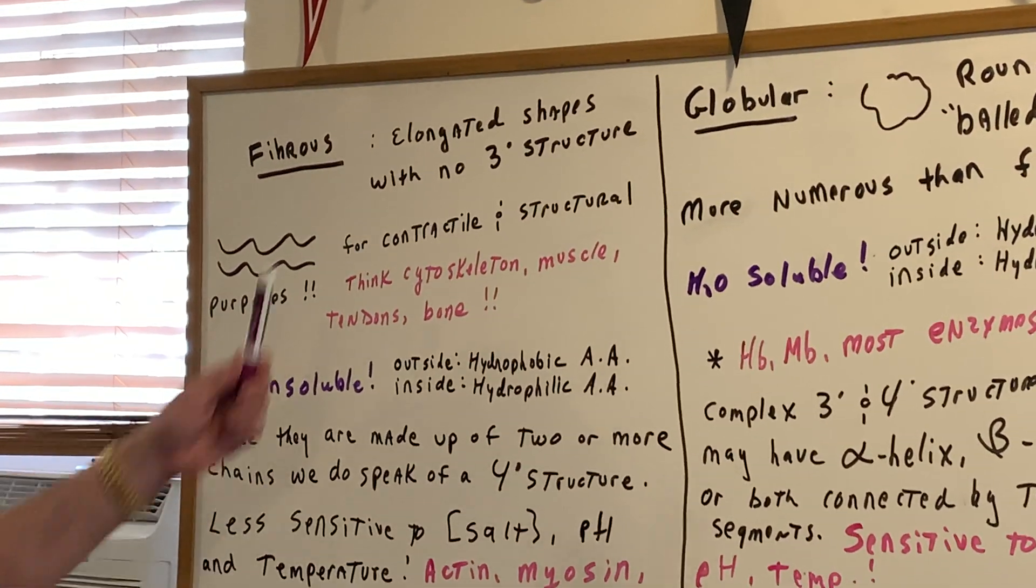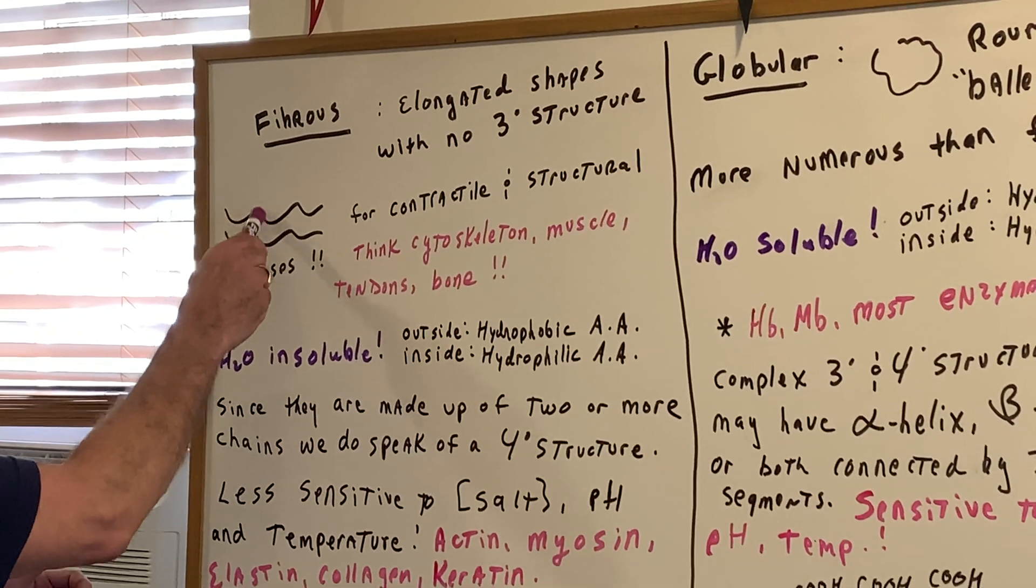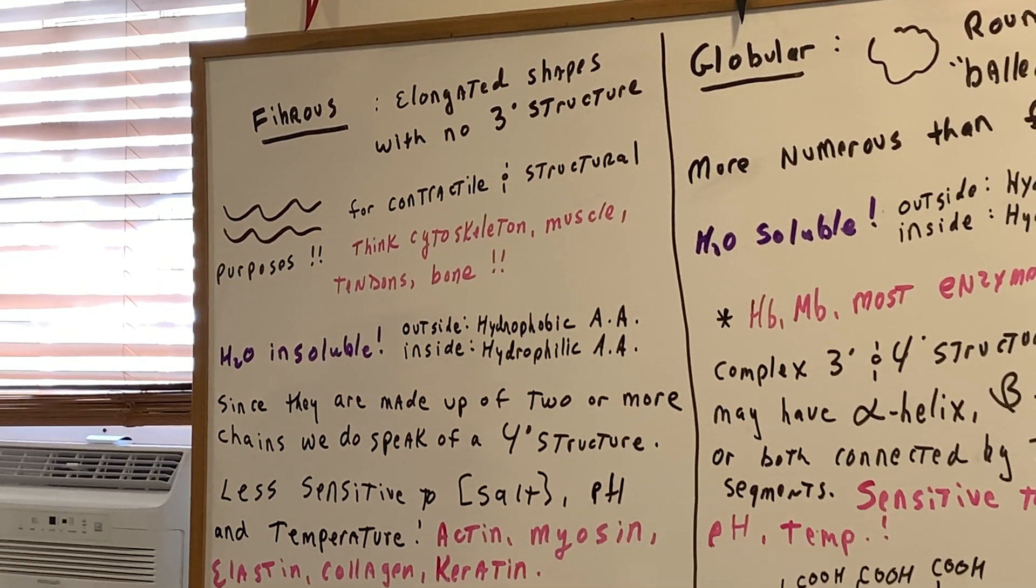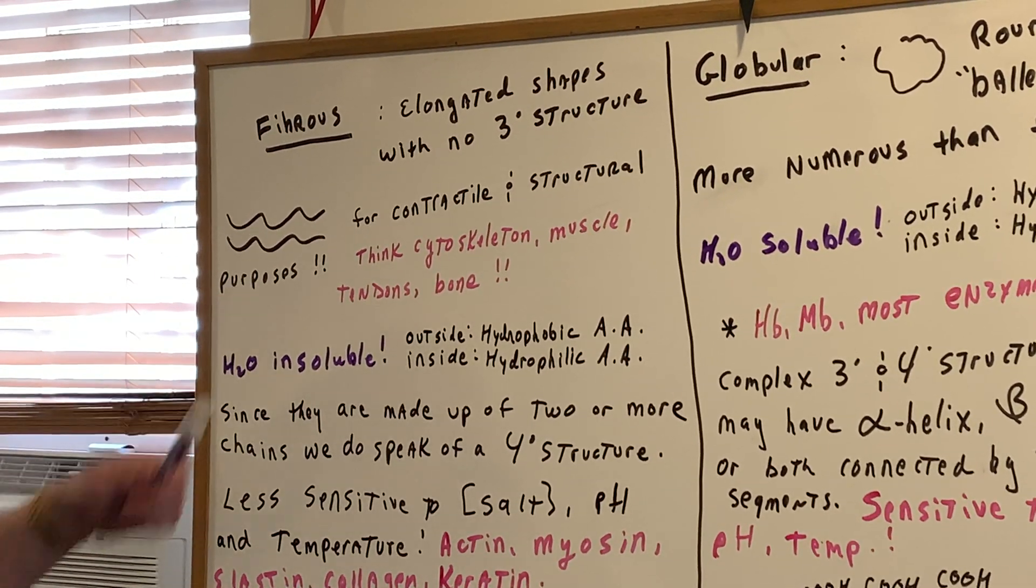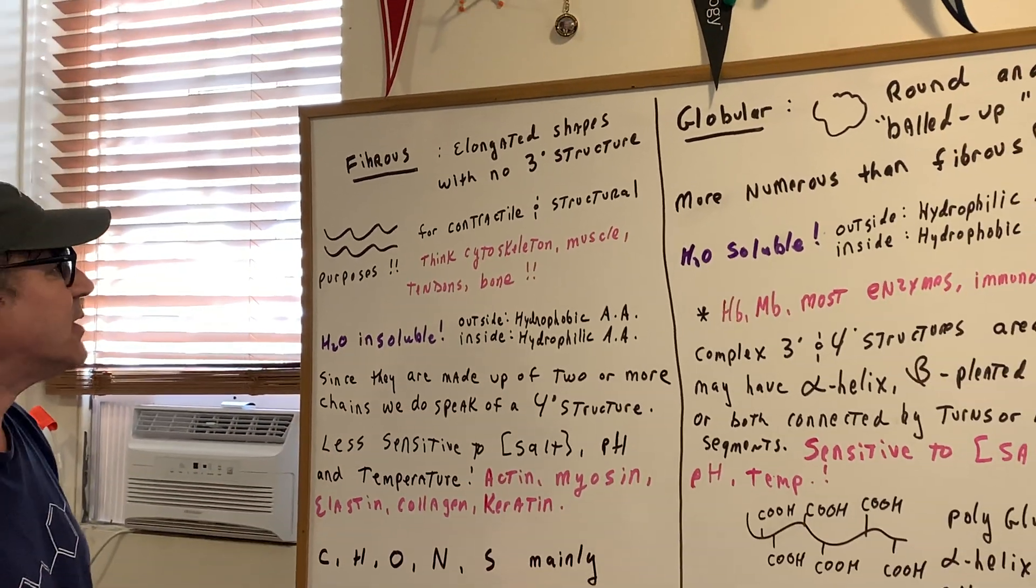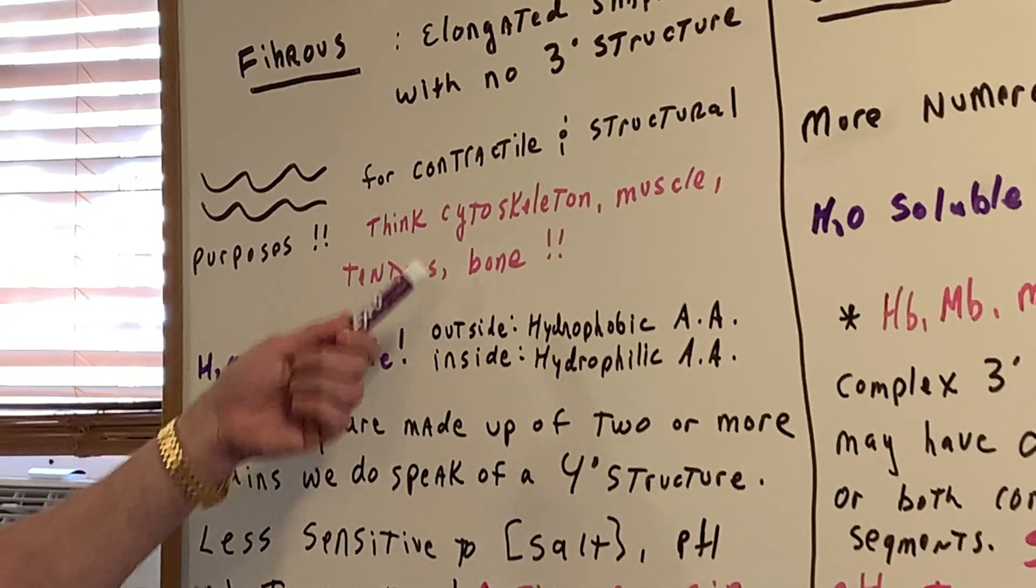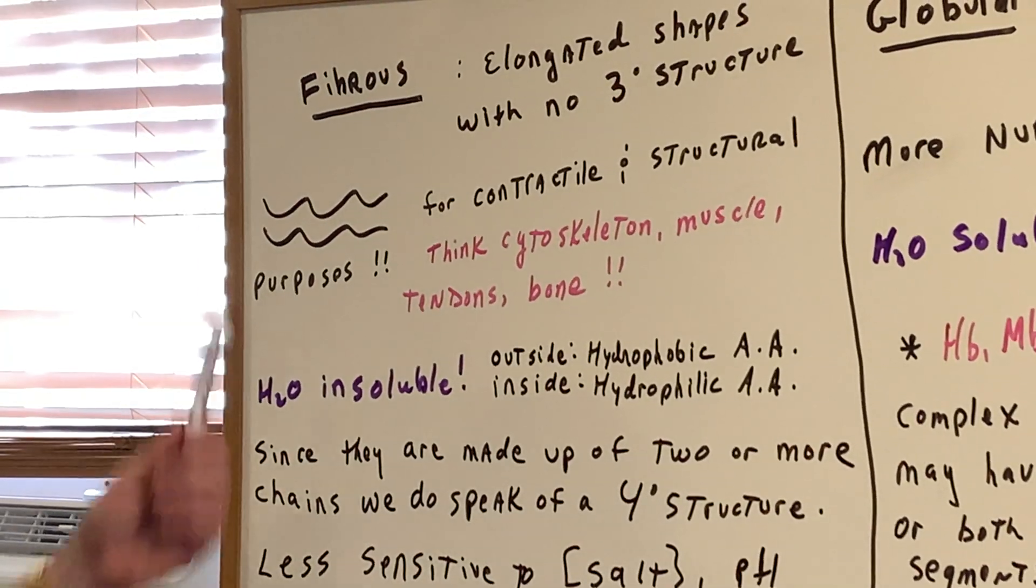A fibrous protein, as I wrote down, is elongated in shape. So as you can see, I sort of drew it to look like fibers, right? And notice they have no 3D structure, so there's no tertiary structure on a fibrous protein. Fibrous proteins are for contractile and skeletal and structural purposes. For instance, think cytoskeleton or think muscle, tendons, bone. Things that are used for strength, we're going to have fibrous proteins.